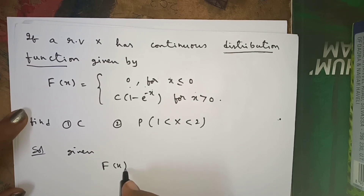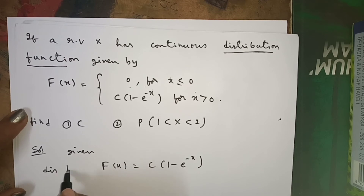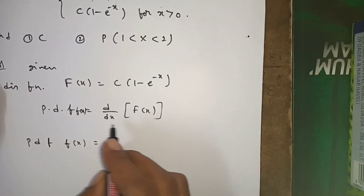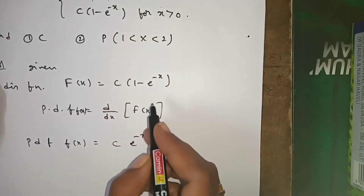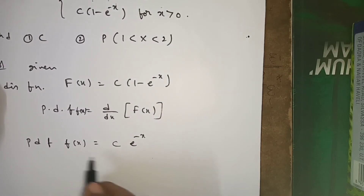Given: capital F(x) = c·(1 - e^(-x)) for x > 0. We convert this distribution function to the PDF by differentiating: small f(x) = d/dx of F(x). Differentiating c·(1 - e^(-x)) gives c·e^(-x), since the derivative of -e^(-x) is +e^(-x), and the constant term differentiates to zero.